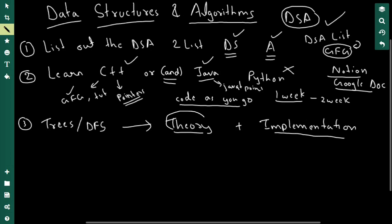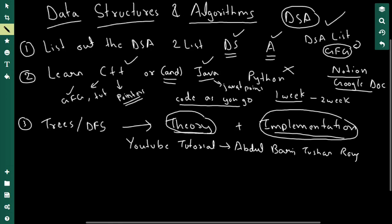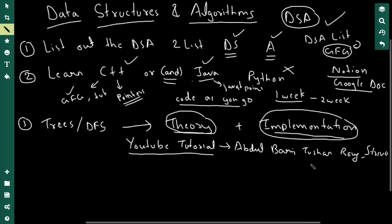The best way to learn the theory of any data structure or algorithm — whether that's trees, dynamic programming, DFS, greedy, whatever — is YouTube tutorials. I'm going to suggest some channels: Abdul Bari, Tushar Roy, and Stryver. Or you can simply search something like 'trees in-order traversal theory' on YouTube. Learning theory from YouTube tutorials is the best way to approach the theory part.